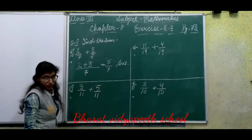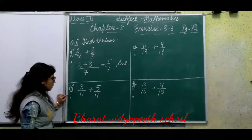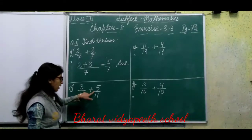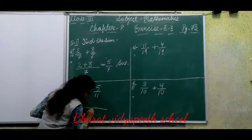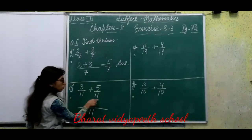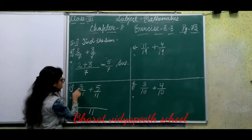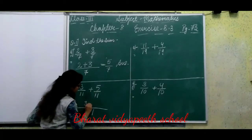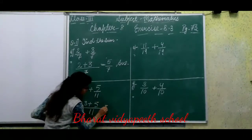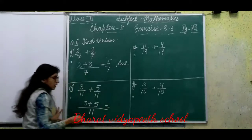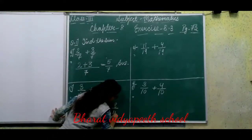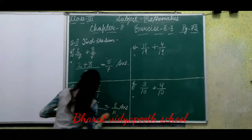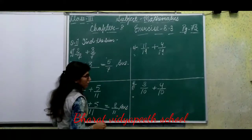Now Part C: 3/11 plus 5/11. The denominator 11 is the same for both, so we do the same. We add the numerators: 3 plus 5 equals 8. So the answer is 8 upon 11. Answer is clear, third class.